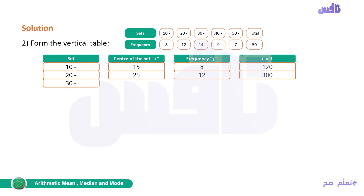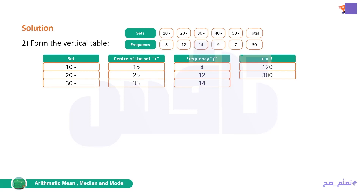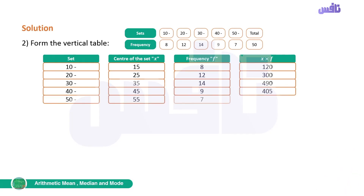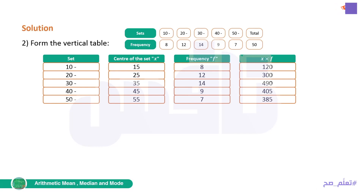For the last set from 50 to less than 60: center = (50 + 60) / 2 = 55. We also notice that the difference between consecutive centers is always 10: 15, 25, then certainly 35, 45, and so on — the difference stays the same.